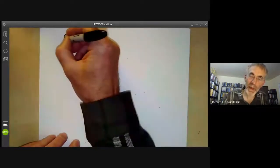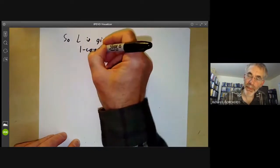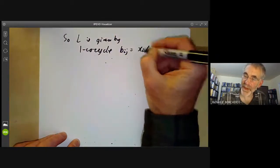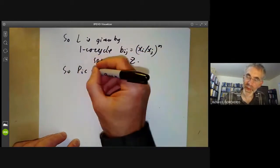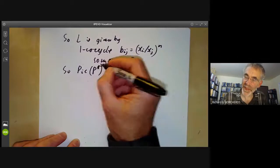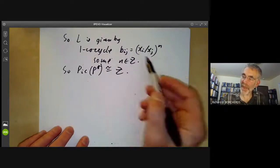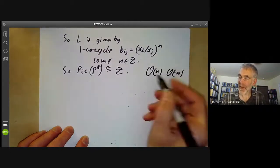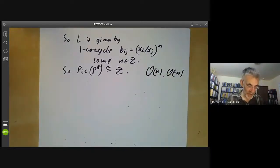The line bundle L is given by the one co-cycle B_ij equals (X_i over X_j) to the N for some integer N in Z. So the Picard group of P—I shouldn't really call it P^N because I've overused N—P^R is just isomorphic to Z. This one co-cycle obviously corresponds either to the sheaf O(N) or possibly to the sheaf O(-N), and I can never remember which way around they go. It's easy to make a sign error with this depending on which way around you put these X_is and j's, so I'm not going to bother.